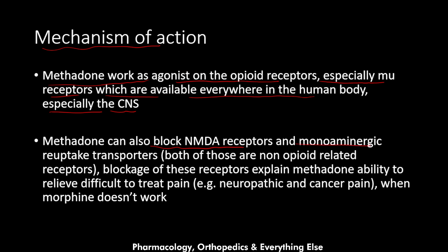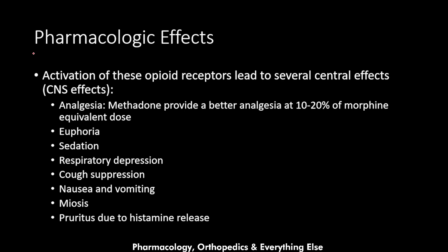Methadone also blocks the monoaminergic reuptake transporters, both of which are non-opioid related receptors. The blockade of these receptors explains methadone's ability to relieve difficult-to-treat pain — such as neuropathic and cancer pain when morphine doesn't work — making it superior to other opioids by having this ability to block NMDA and monoaminergic receptors.